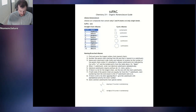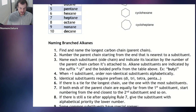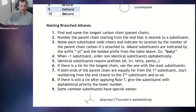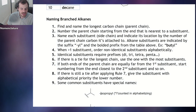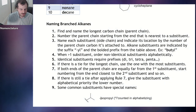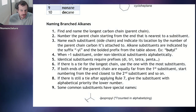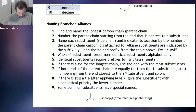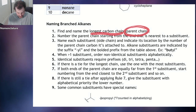Here are the steps for naming branched alkanes — we have to follow the steps. There are nine steps, but often you don't have to use all of them. Step one says: find and name the longest carbon chain, and we're going to call that the parent chain.